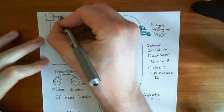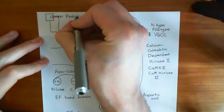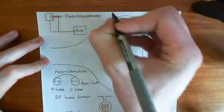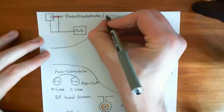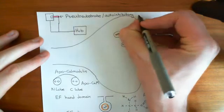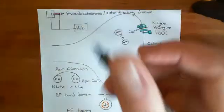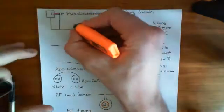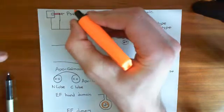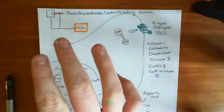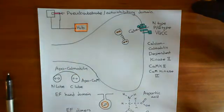The pseudosubstrate is also known as the auto-inhibitory domain — it sits within the active site and prevents the active site from catalyzing its reaction, which is to add phosphate groups onto serine and threonine residues. The hub region is important in the oligomerization of the enzyme; the enzyme doesn't operate as a monomer but goes around with multiple subunits together.